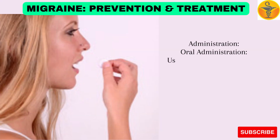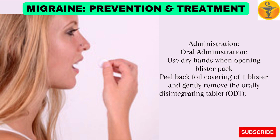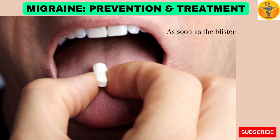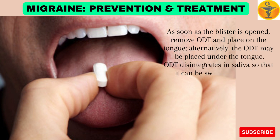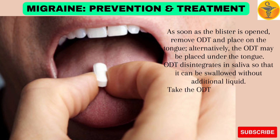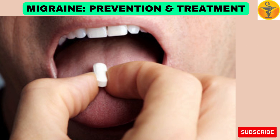Administration — Oral administration: Use dry hands when opening the blister pack. Peel back the foil covering of one blister and gently remove the orally disintegrating tablet (ODT). Do not push the ODT through the foil. As soon as the blister is opened, remove the ODT and place on the tongue. Alternatively, the ODT may be placed under the tongue. The ODT disintegrates in saliva so that it can be swallowed without additional liquid. Take the ODT immediately after opening the blister pack. Do not store ODT outside the blister pack for future use.